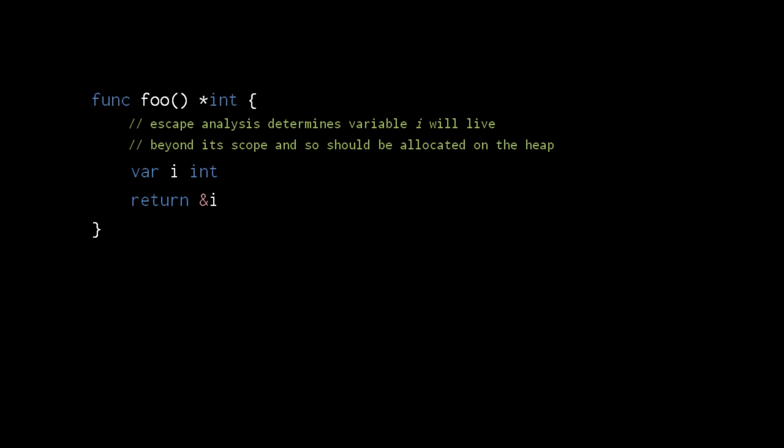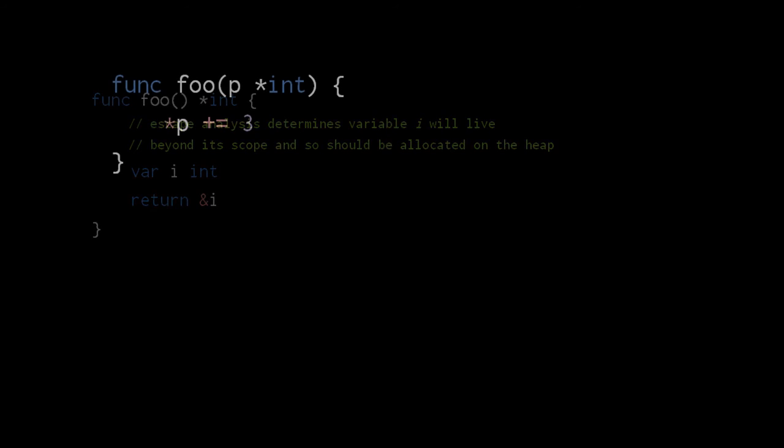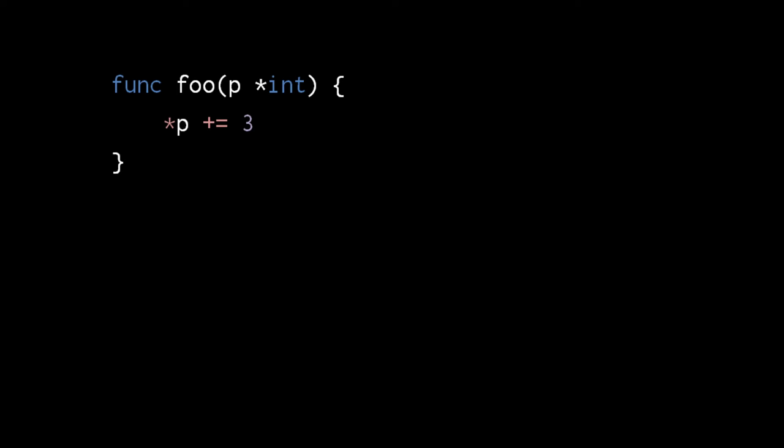Like slices and other reference types, pointers can create scenarios where local variables of a function may outlive the call in which they are created. The compiler uses escape analysis to detect such scenarios and allocates local variables on the heap as needed. Here, for example, a pointer to the local int variable i is returned from the function, and so variable i will be allocated on the heap rather than the stack. When we pass a pointer to a function, the pointer itself is copied, not the data to which it points. So here, using dereference to modify the value pointed to by parameter p will have an effect outside the function. If we pass a pointer to this int variable i to foo, the value of i gets incremented by 3.